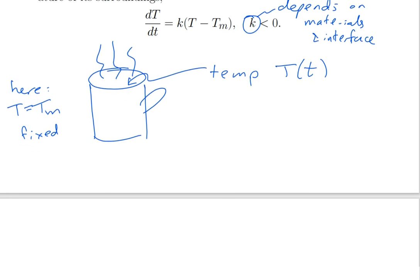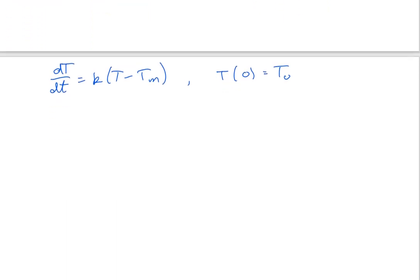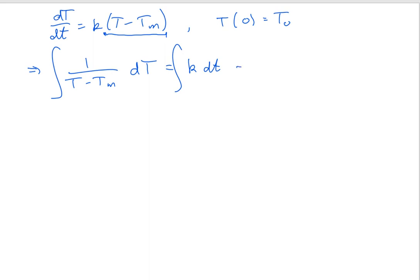So we're going to solve this differential equation. We have dT/dt equals k times (T minus Tm), with initial condition T(0) = T₀. This is separable, so I need to divide by the right-hand side to get all the T's on the left. I get 1/(T minus Tm) on the left and k dt on the right. Integrating both sides: the right gives kt + c. For the left, using the substitution u = T minus Tm, it comes out to log of the absolute value of T minus Tm, equal to kt + c. That's the implicit solution.